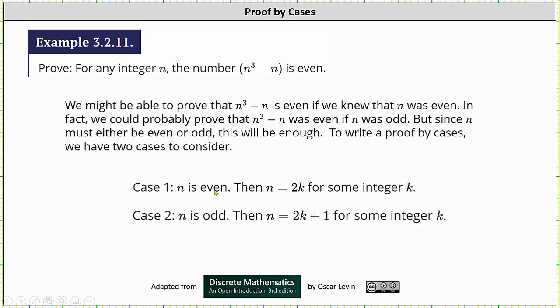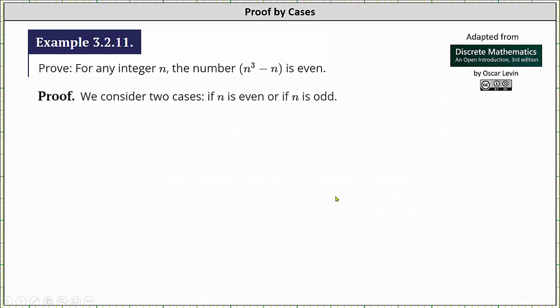Case one, n is even, then n is equal to 2k for some integer k, and case two is n is odd, then n equals 2k + 1 for some integer k. And now let's proceed to our proof. We consider two cases if n is even or if n is odd. Case one, n is even, then n equals 2k for some integer k.